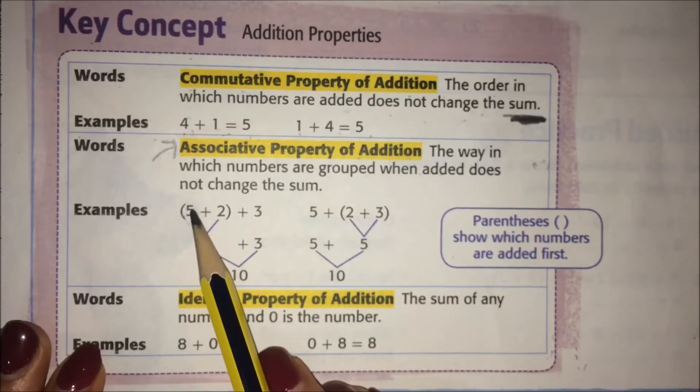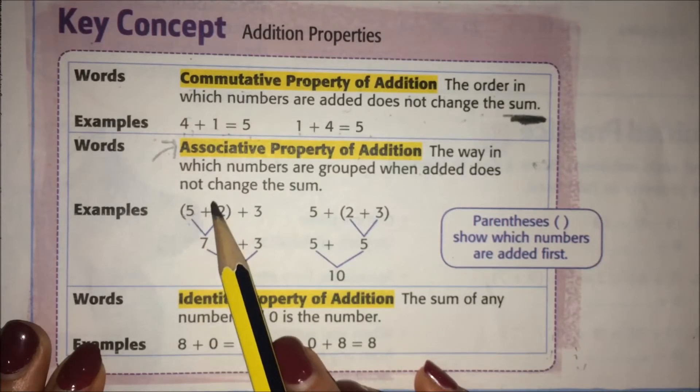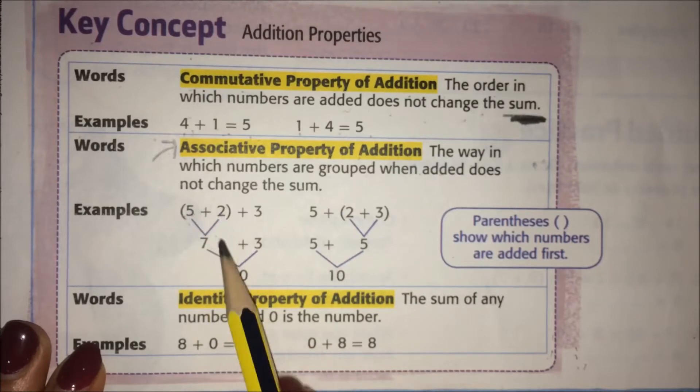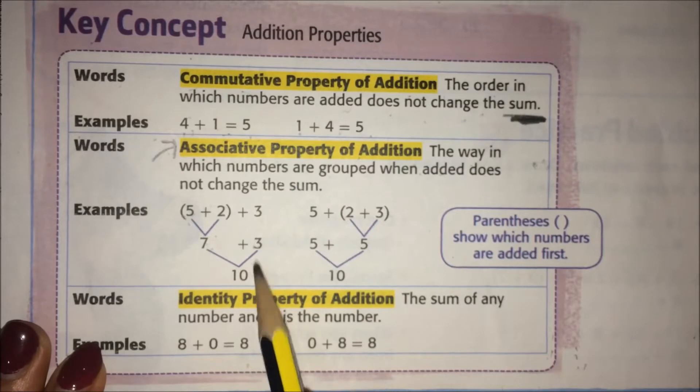It means the way in which numbers are grouped when added does not change the sum. So it doesn't matter if you have (5+2)+3. When you have parentheses, that means you always add those ones first. So adding this first, five plus two is seven, and then adding the three. Seven plus three is ten.